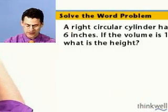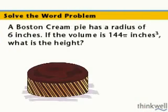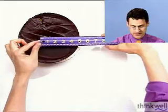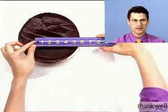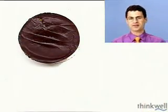So we're given this right circular cylinder. Let's change the problem — suppose you're given a Boston cream pie, and you're told that its radius is six inches. Now, how do you find the volume of a cylinder? We need the formula for volume in terms of the radius and the height.